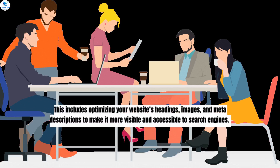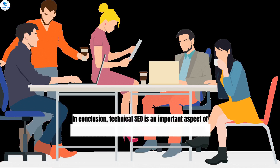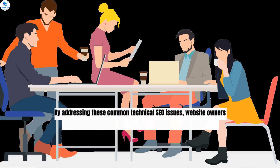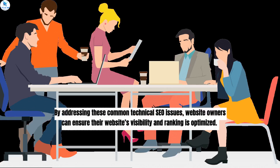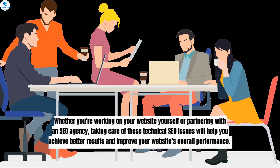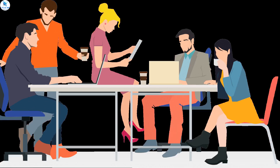9. Content. Content is king, and technical SEO is no exception. A website's content needs to be well written, optimized, and easily accessible to both users and search engines. This includes optimizing your website's headings, images, and meta descriptions to make it more visible and accessible to search engines. In conclusion, technical SEO is an important aspect of search engine optimization that cannot be overlooked.